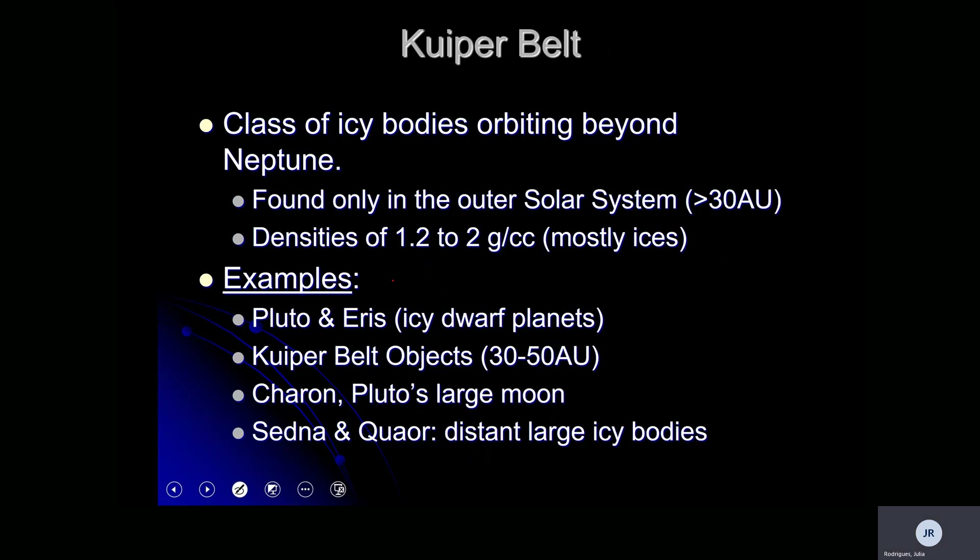The Kuiper belt consists of icy bodies orbiting beyond Neptune, only found in the outer solar system. Densities there are pretty low — about 0.1 to 2 grams — and it's mostly ice. Examples of Kuiper belt objects include icy dwarf planets such as Pluto, Eris, Pluto's moon, and other large distant ice bodies found out there.